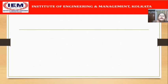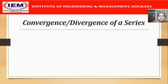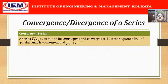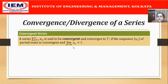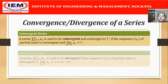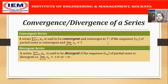Now let us define convergence or divergence of a series. A series summation from n=1 to infinity of a_n is said to be convergent and converges to L if the sequence {S_n} of partial sums is convergent and lim S_n as n tends to infinity equals L. This means that to test the convergence of a series, we construct the sequence of partial sums and test whether that sequence is convergent. If the sequence of partial sums converges to a finite limit L, then the series is also convergent.